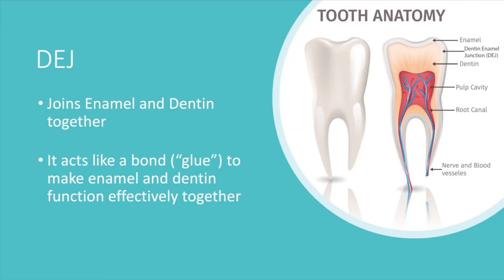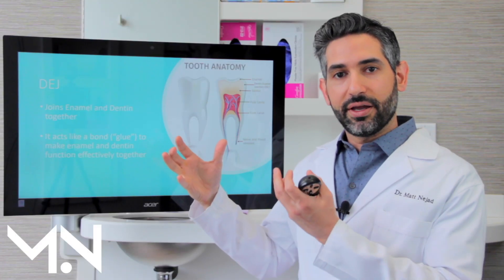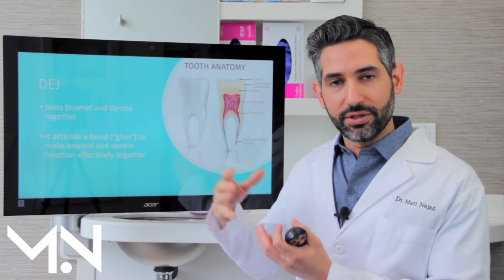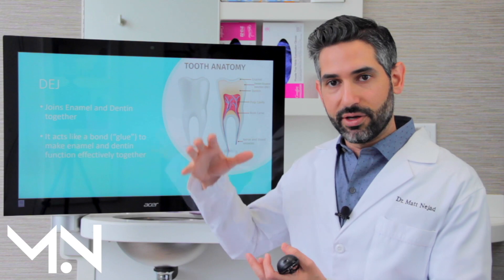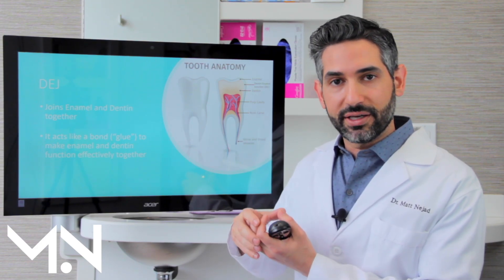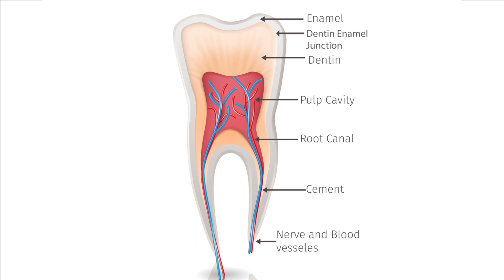Between your enamel and dentin — because these are two different materials — they're not one solid piece; you have one layer and then the next layer. So they're joined together by what's called the DEJ, which means dentin enamel junction.